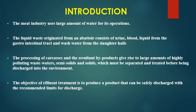The meat industry uses a large amount of water for its operations. The liquid waste originated from an abattoir consists of urine, blood, liquid from the gastrointestinal tract, and wash water from slaughter halls. Processing of carcasses and the resultant by-products gives rise to large amounts of highly polluting wastewaters, semi-solids and solids which must be separated and treated before being discharged into the environment. The objective of effluent treatment is to produce a product that can be safely discharged within the recommended limits.